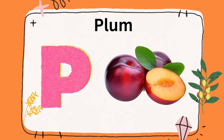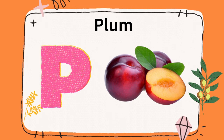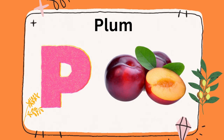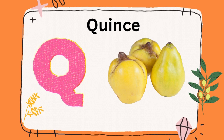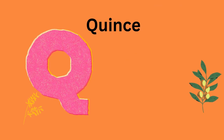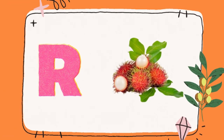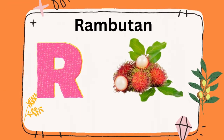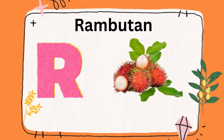P is for plum, plum. Q is for quince, quince. R is for rambutan, R is for rambutan, rambutan.